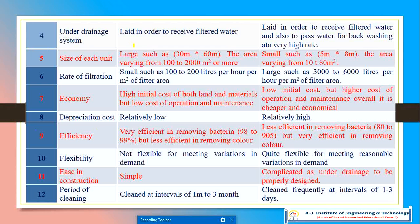The fourth comparison is the underdrain system. In the slow sand filter, the underdrain system is only laid in order to receive filtered water. But in the case of the rapid sand filter, it also passes water for back washing, so the underdrain system is also designed for back washing purposes.